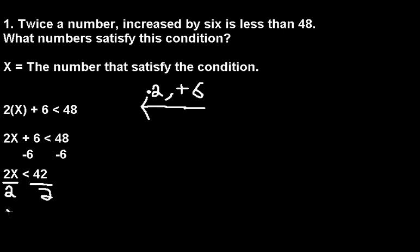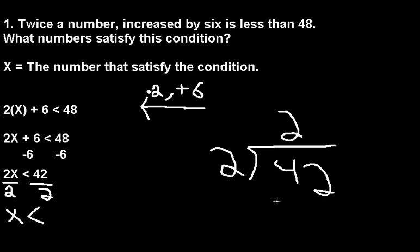It would be x is less than—now let's do the math over here. 2 divided into 42, it should be simple. 2 goes into 4 two times, that gives us 40. Bring down the 2. 2 goes into 2 once. It would be 21.